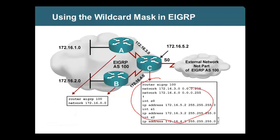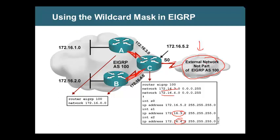On the two internal interfaces of router C, hello packets will be sent and neighbors will be established. On the external interface where the external network is connected, no hello packets are sent and nothing is shared. If no hello packet is sent, no neighbor is formed, and if no neighbor is formed, no updates are shared. So you are safe — you are not sending your internal network information to the external network.